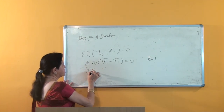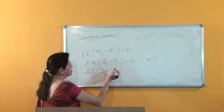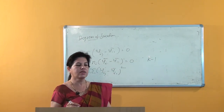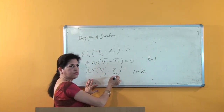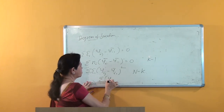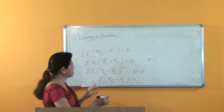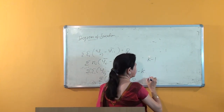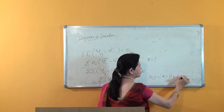For the error term, the degrees of freedom correspond to (y_ij minus y_i-dot bar). The error sum of squares has degrees of freedom n minus k. It consists of n quantities of the form (y_ij minus y_i-dot bar), subject to the linear constraint that summation of (y_ij minus y_i-dot bar) equals zero. Hence, degrees of freedom for total is n minus 1, for treatment is k minus 1, and for error is n minus k.